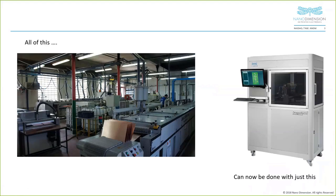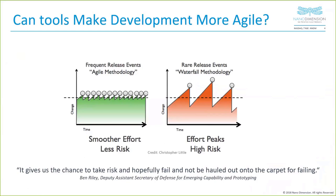The general term for what we're talking about is 'factory in a box.' On the left is a standard PCB house — whether a mom-and-pop shop or a big fab house — lots of chemicals, lots of people, lots of stations. On the other hand, a box about the size of a refrigerator that can do about 80% of the capability of a fab house, and can do it extremely fast — that's a different story.